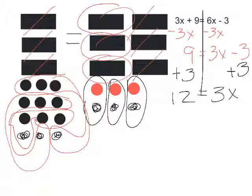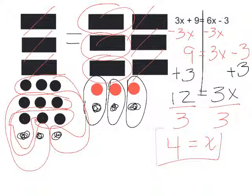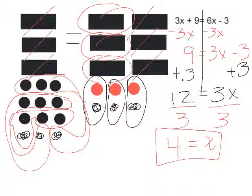Dividing by 3 gives me 4 circles in each part. So 4 equals x. That's how you solve equations when you have subtraction — instead of subtracting 3 from both sides, I added 3 to both sides.